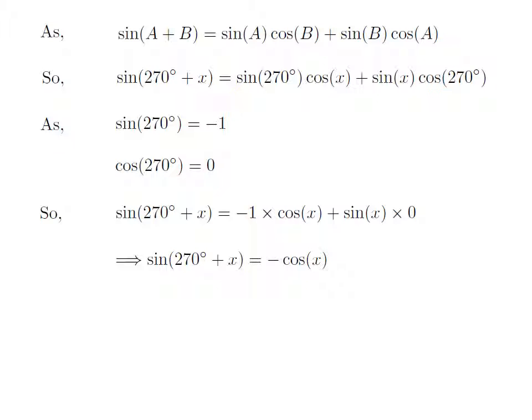So, sine of 270 degree plus x is equal to minus cosine of x plus 0, which is equal to minus cosine of x. Therefore, the value of sine of 270 degree plus x is equal to minus cosine of x.